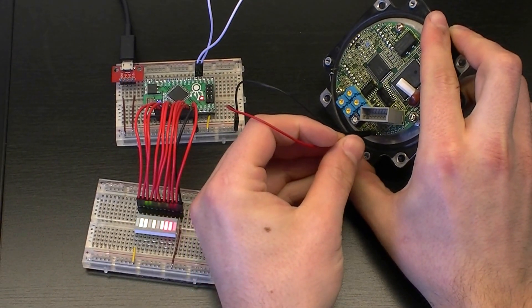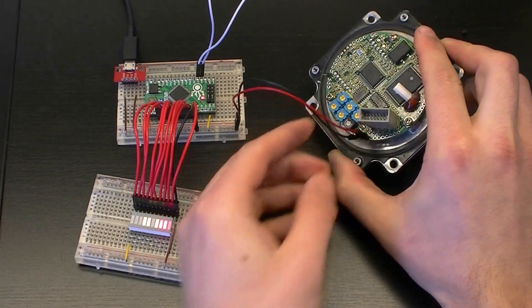Now fortunately this encoder actually only runs off of 5 volts which is perfect. That's exactly what we need.